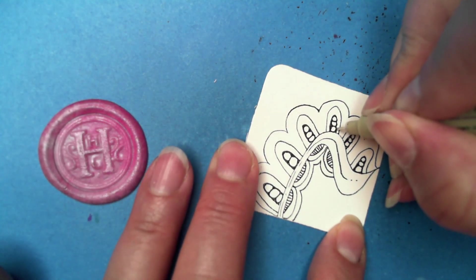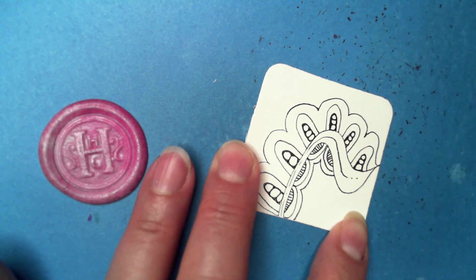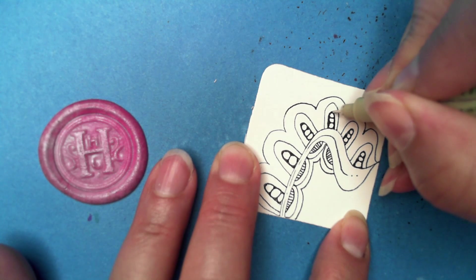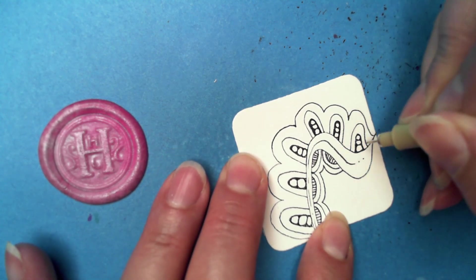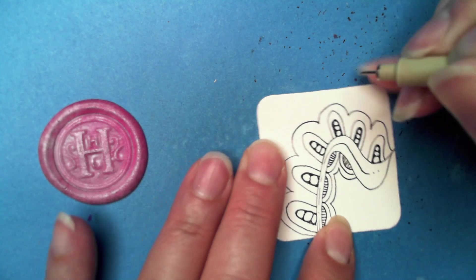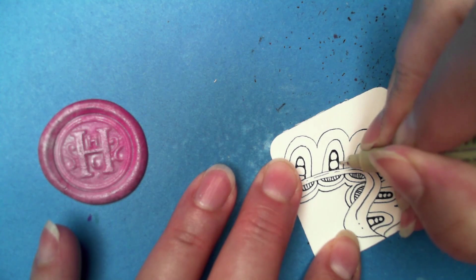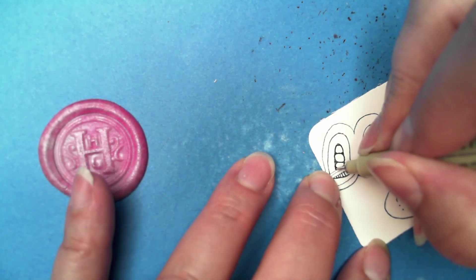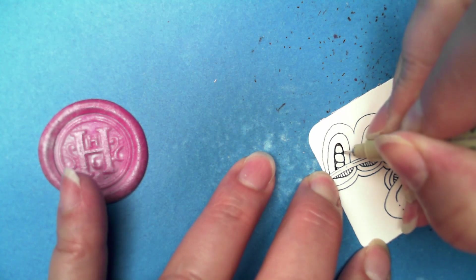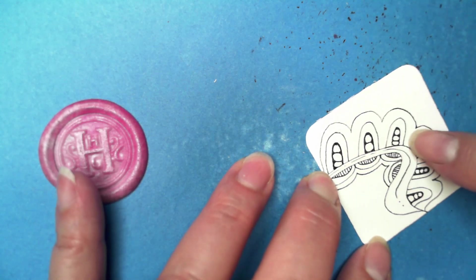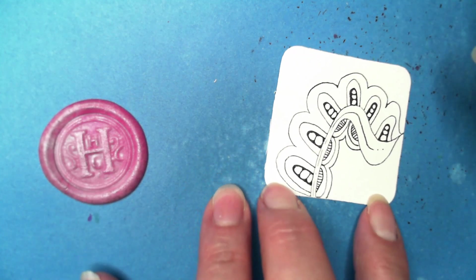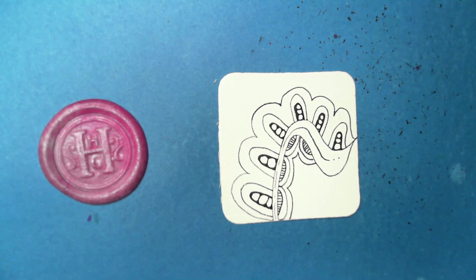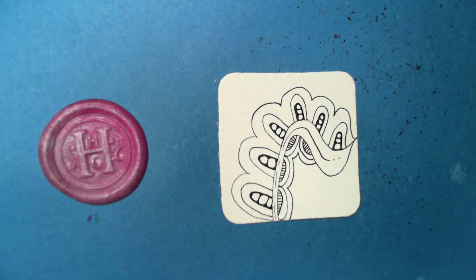I'm seeing how sloppy this is right here, so I'm going to just trace over to neaten that up. Even if I go out a little further, that's okay. Sometimes you just have to go out a little bit, but that kind of cleans up the line. When I'm filling in the little gaps, a lot of times that's where it gets messy because the pen will go out just a little bit.